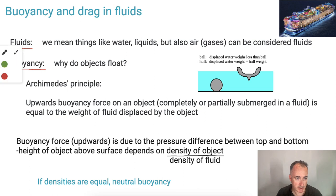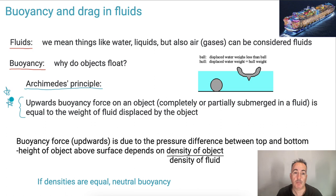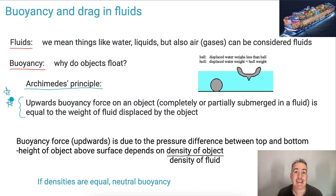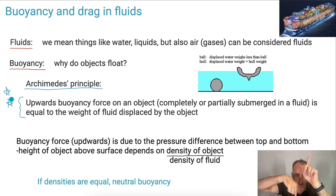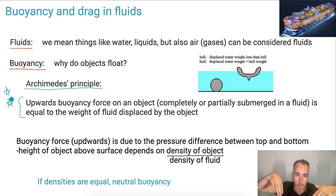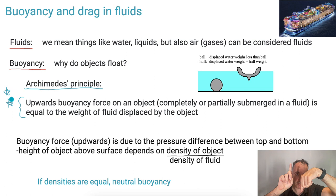Archimedes' Principle helps us understand why things actually float. The key thing is the upwards buoyancy force. That force — whether an object is completely or partially submerged in a fluid — is equal to the weight of the fluid displaced by the object. When I put something in water, I have to move water out of the way. Whatever that force is of the displaced fluid, that will be the force pushing it upwards, and hopefully it's enough to satisfy gravity going downwards.